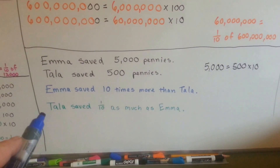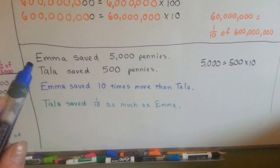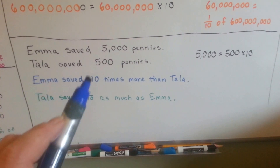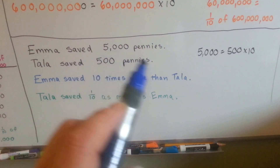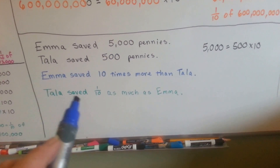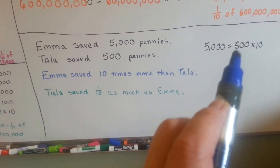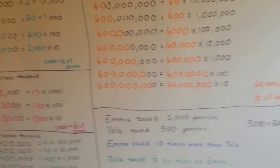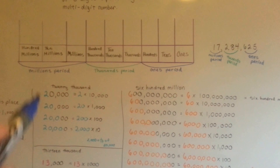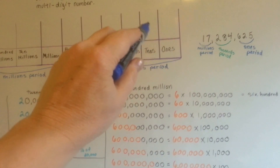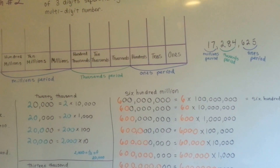Now I want to leave you with one last thought. Emma saved five thousand pennies. Tala saved five hundred pennies. Emma saved ten times more pennies than Tala, because five thousand equals five hundred times ten. That's how we can move the place value — instead of writing six hundred million, we could write sixty million in the tens place: sixty million tens. That's how we move the place value.